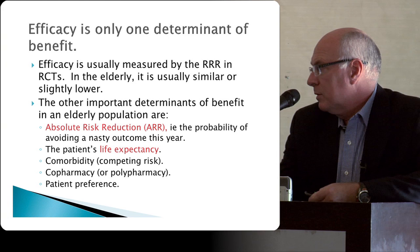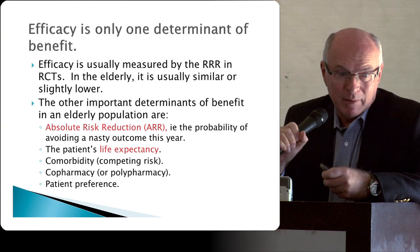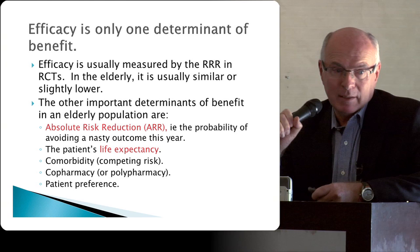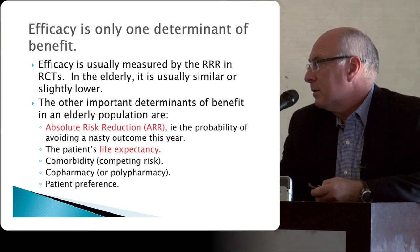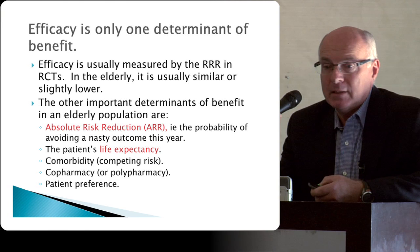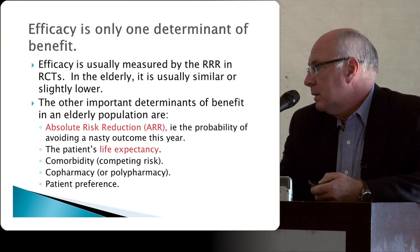Efficacy is not the same as benefit. Other determinants of benefit include the absolute risk reduction — what is the likelihood of something bad happening to this patient this year — life expectancy, which we don't usually give much consideration to, comorbidity, co-pharmacy — what other drugs the patient is on — and patient preference.